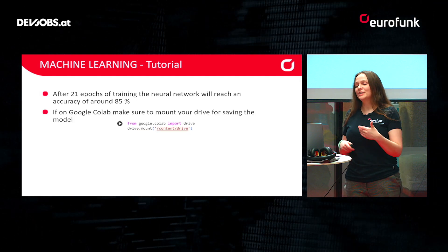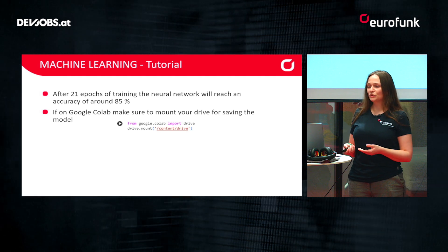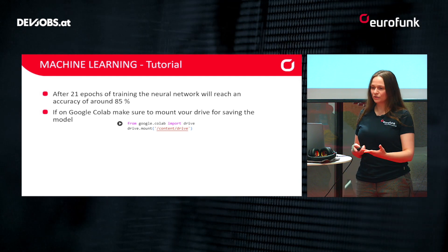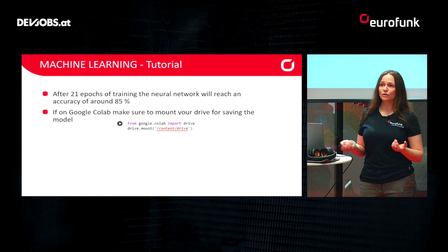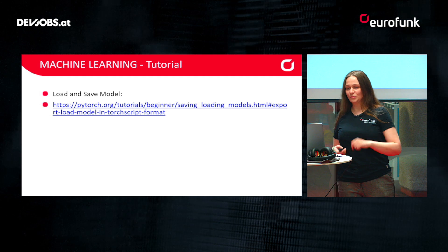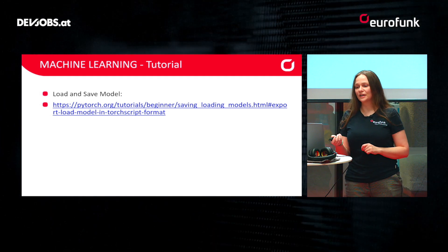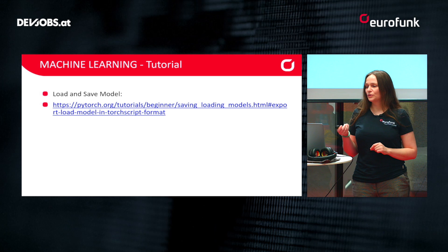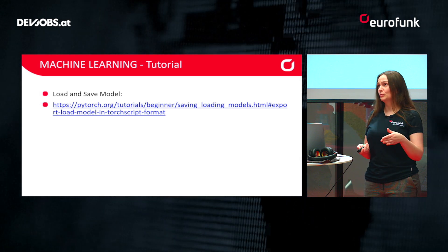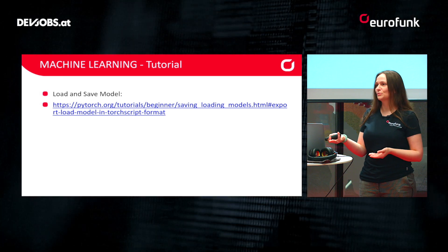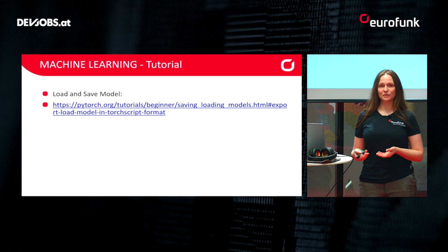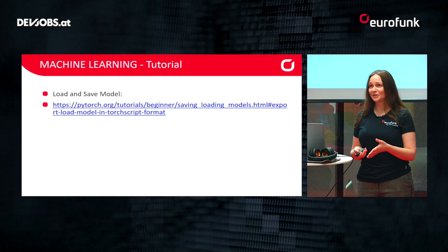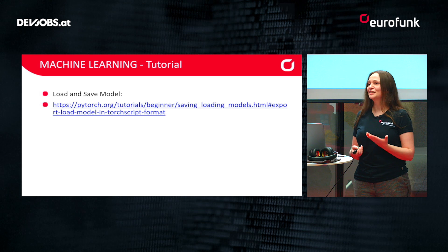When you have trained this on Google Colab, you just have to make sure you store your network correctly. You have to mount your drive and then store it to Google Drive, where you can download it for local use. On the PyTorch page, the loading and saving of the model is also very nicely described. After 21 epochs you're not really getting any better improvements — you're getting stuck at some point — which means you would need more data or have to change something about the data.